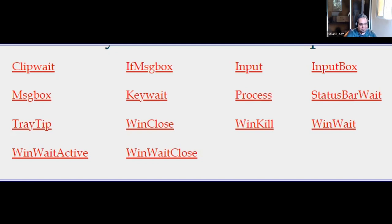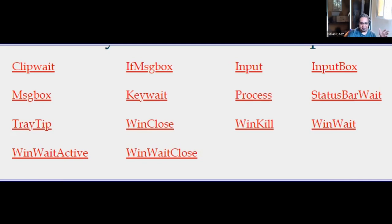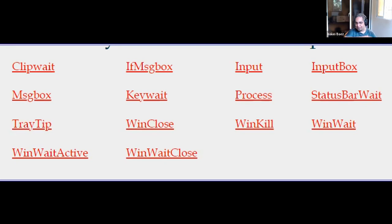All of them have a timeout period, and the timeout period in AutoHotKey is usually in seconds. So if you say WinClose, there's a timeout parameter, and that parameter is in seconds. The same with message boxes — whenever you show a message box, you have a timeout parameter. And all parameters that are timeout — for example, ClipWait has a timeout period — that timeout is in seconds, which is counterintuitive to the fact that everything else is in milliseconds.